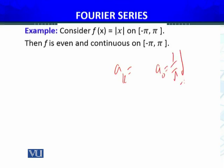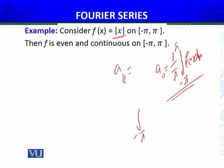The formula for a₀ is: a₀ = (1/π) ∫₋π^π f(x) dx. We can easily determine this for the particular function |x|. Of course, I have to split it: from −π to 0, the definition of |x| is −x, so we have ∫₋π^0 (−x) dx + ∫₀^π x dx. You can evaluate this integral yourself easily.